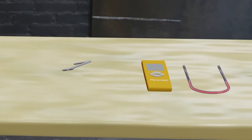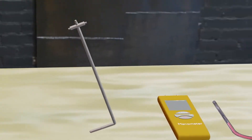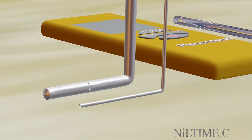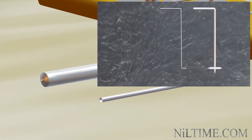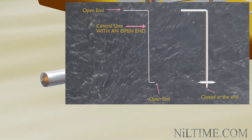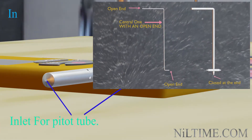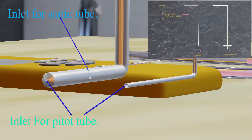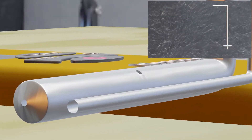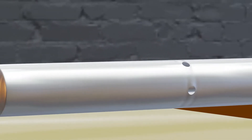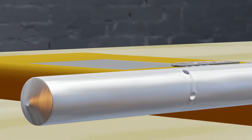The Pitot-static tube consists of two concentric tubes. The central one has an open end pointing upstream of the fluid flow, and the other is closed at the end but with small holes drilled at right angles to the direction of flow.